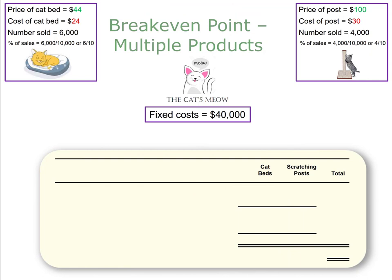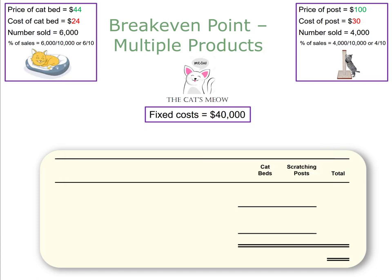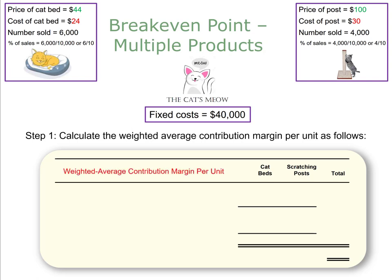Now we have all the information we need to calculate the break-even point for a company with multiple products. Management is asking: keeping in mind that 60% of our sales are cat beds, how many cat beds and how many scratching posts must we sell to break even? There are three steps to the process. Step one is to calculate the weighted average contribution margin per unit.